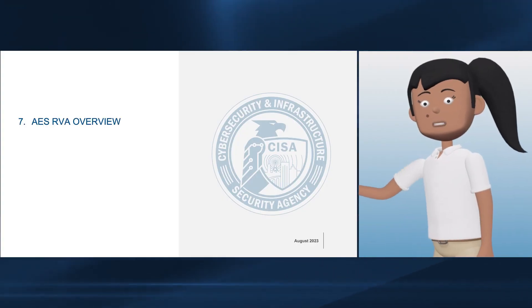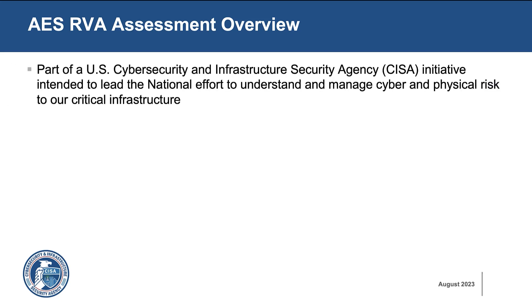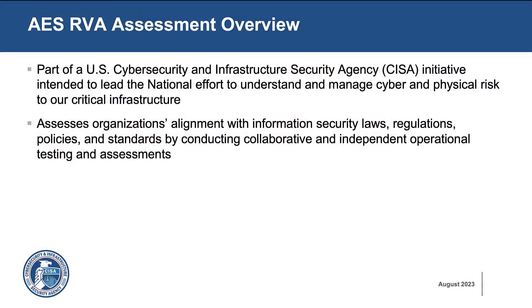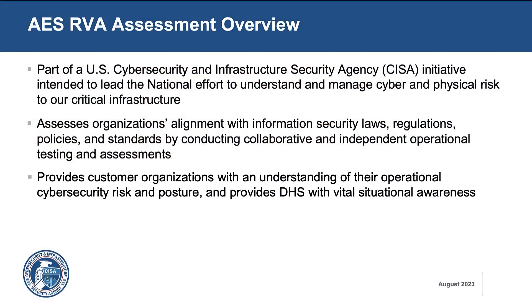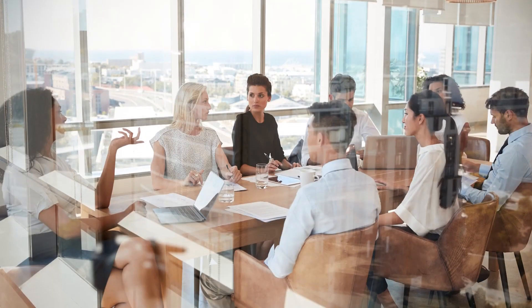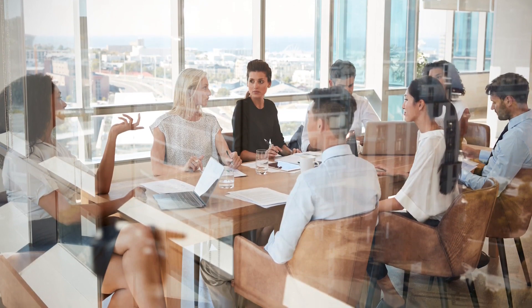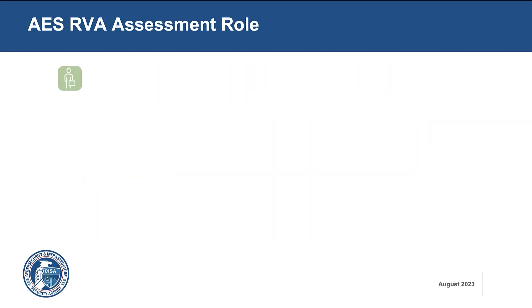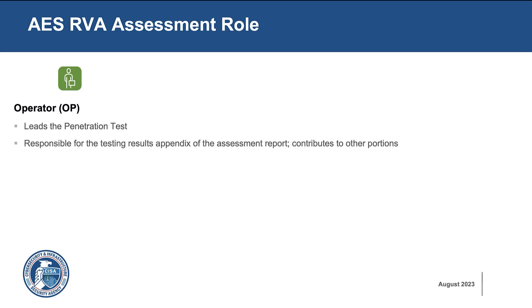Now let's look at the AES RVA course in depth. The AES RVA assessment is part of a CISA initiative to lead the national effort to understand and manage cyber and physical risk to our critical infrastructure. It assesses organizations' alignment with information security laws, regulations, policies, and standards by conducting collaborative and independent operational testing and assessments. It provides customer organizations with an understanding of their operational cybersecurity risk and posture and provides DHS with vital situational awareness, and delivers the RVA assessment final report. The operator role supports the RVA; the RVA is the parent training course for all operators in any assessment. All penetration testers will be trained through the RVA but qualified in any assessment.